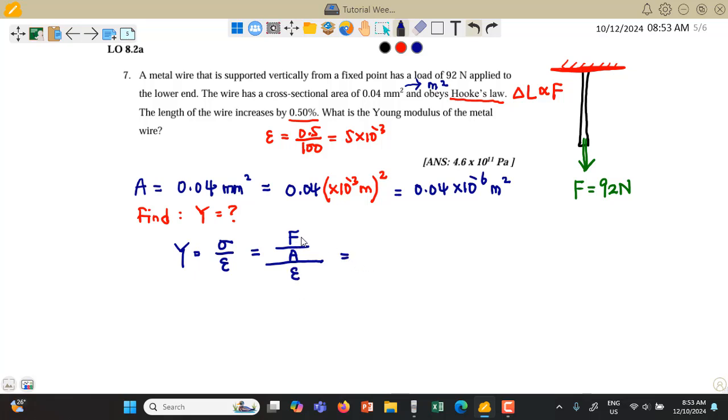Then we put in all the values. The force is 92 N. The cross-sectional area of the wire is 0.04 times 10 to the power of negative 6. The strain is 5 times 10 to the power of negative 3.